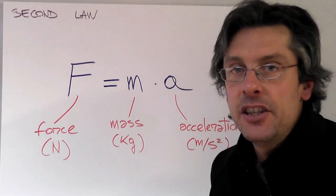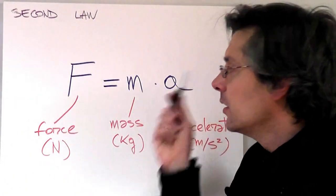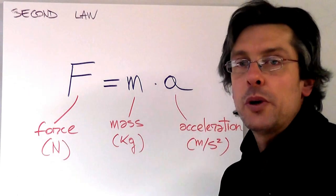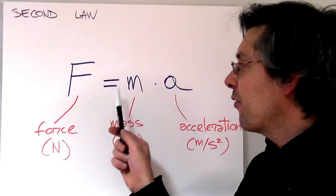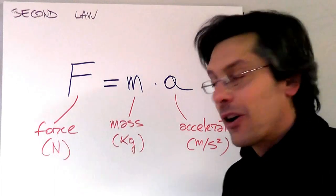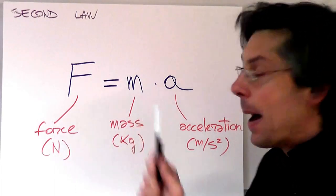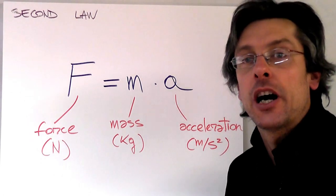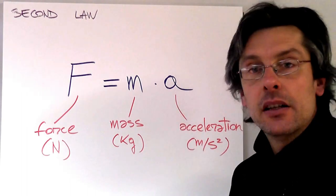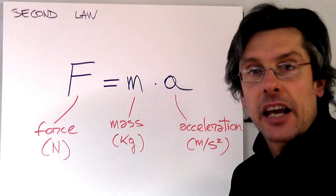Now Sir Isaac Newton nicely summarized all these things by writing this very elegant formula. And this is what we call the second law of motion. F equals M times A, where F stands for force, measured in newtons. M is the mass, or the inertia, measured in kilograms. And A is the acceleration, measured in meters per second squared.